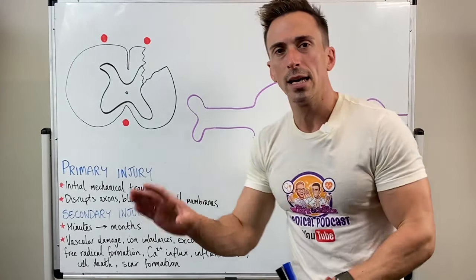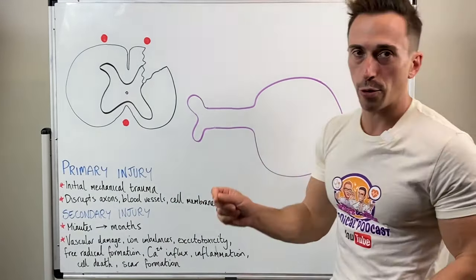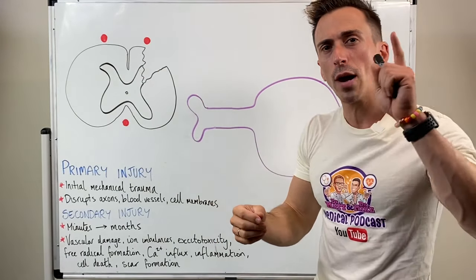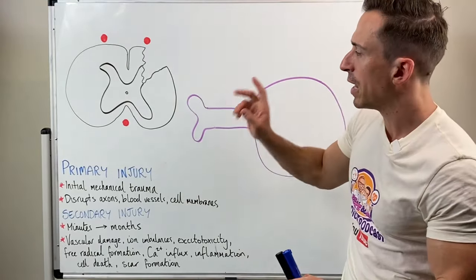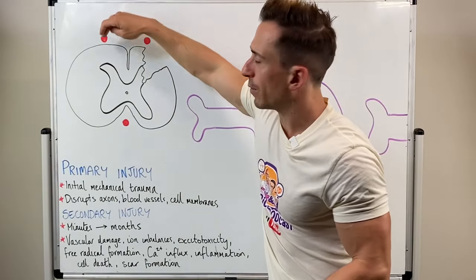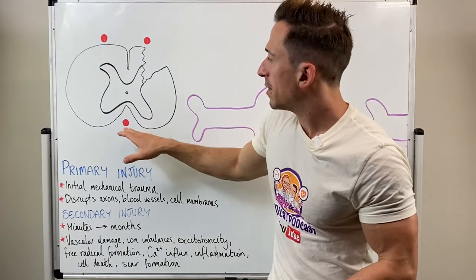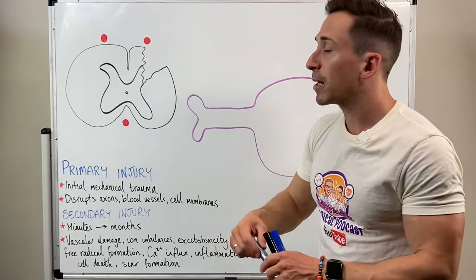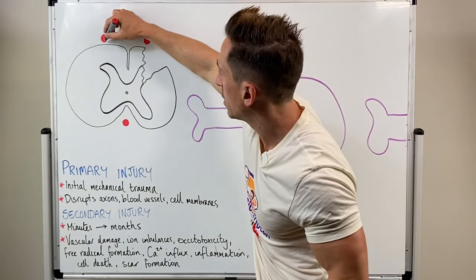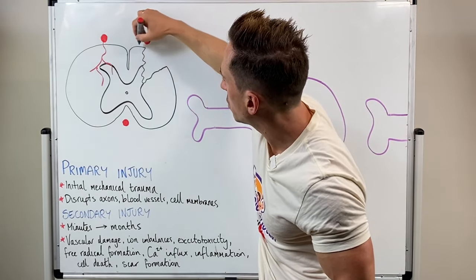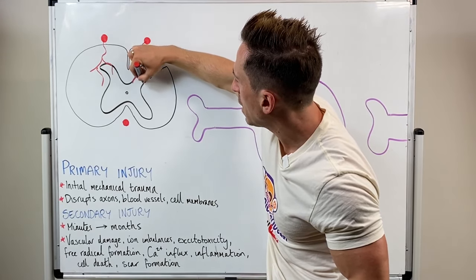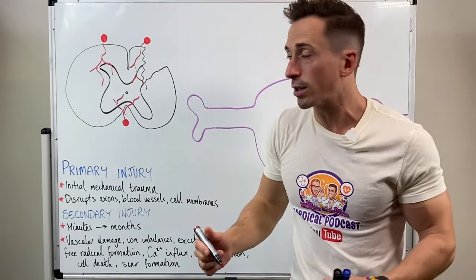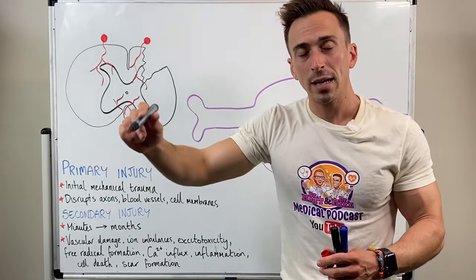The first thing is the initial spinal cord injury, the primary injury. You've got direct damage, potentially from bone fragments, but you also have vascular damage. The blood vessels are affected. There are three large arteries that feed the spinal cord—they're rarely affected in this case. But the branches of these blood vessels, they're the ones that are affected. These branches go into the spinal cord and feed oxygen and nutrients to the neurons and glia.